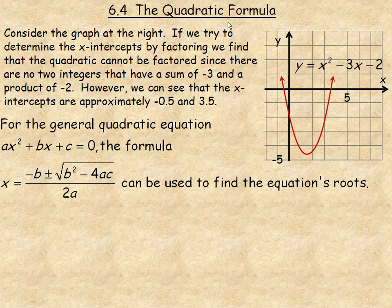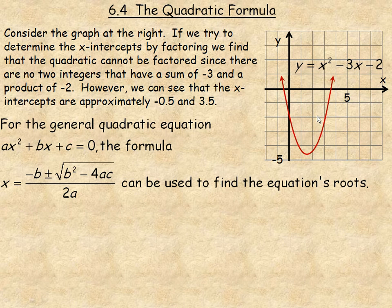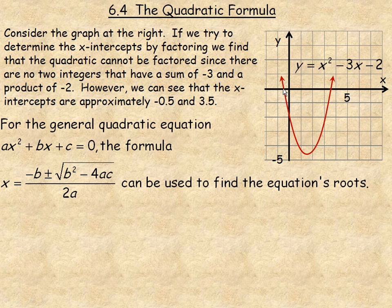This lesson will take a look at what's called the quadratic formula, which is a specific formula for solving quadratic equations. Looking at the graph on the right side, and we're given the equation as well, you'll notice that the x-intercepts are not integers. It looks like the x-intercepts are probably around negative 0.5 and about 3.5.